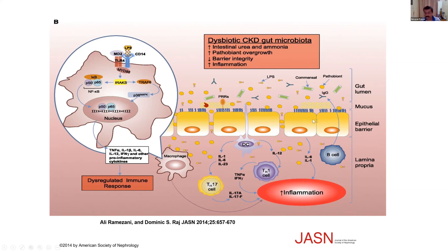What happens then? The tight junctions of the epithelial cells become loose. Dendritic cells behave in such a way that there is activation of Th1 cells, which leads to increased formation of tumor necrosis factor alpha, interferon gamma, interleukin-1, interleukin-6, and Th17 cells.